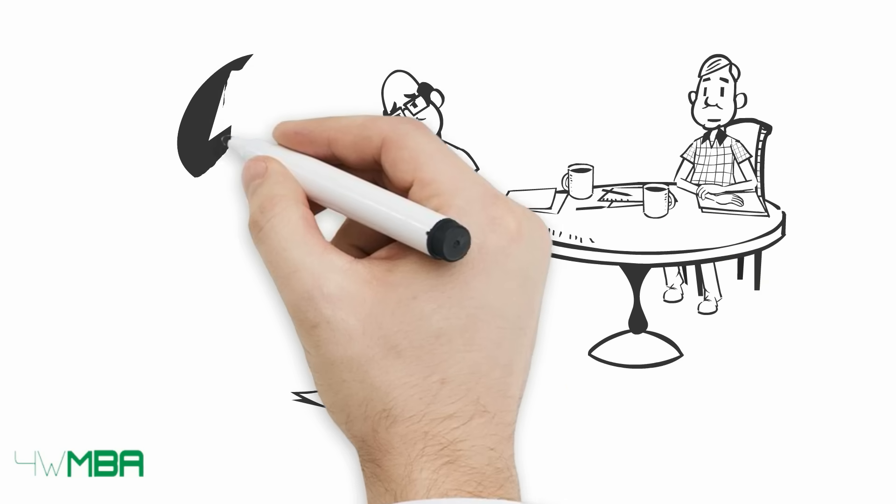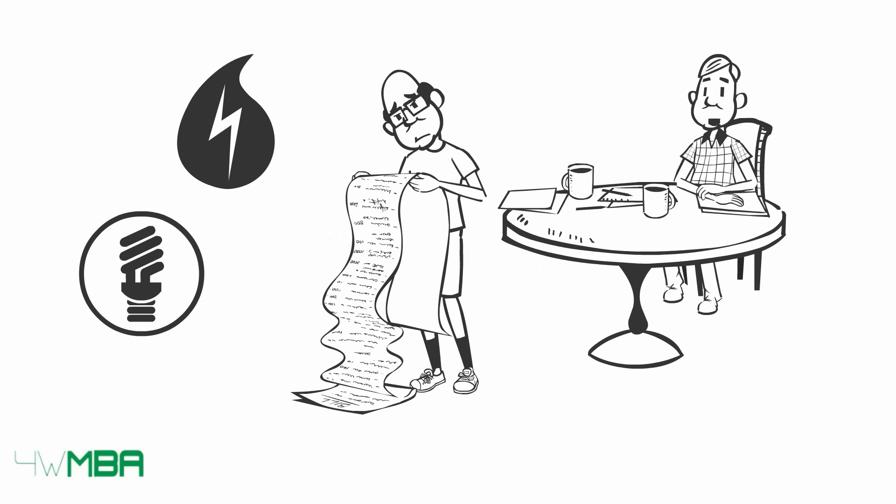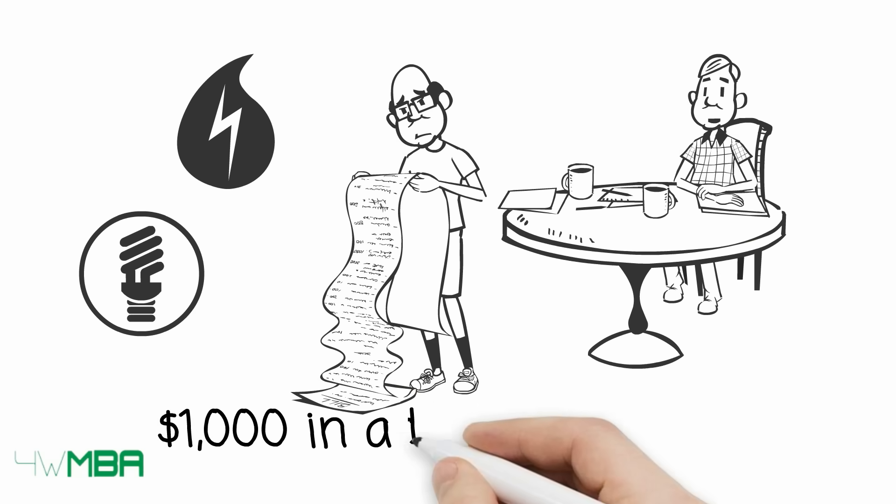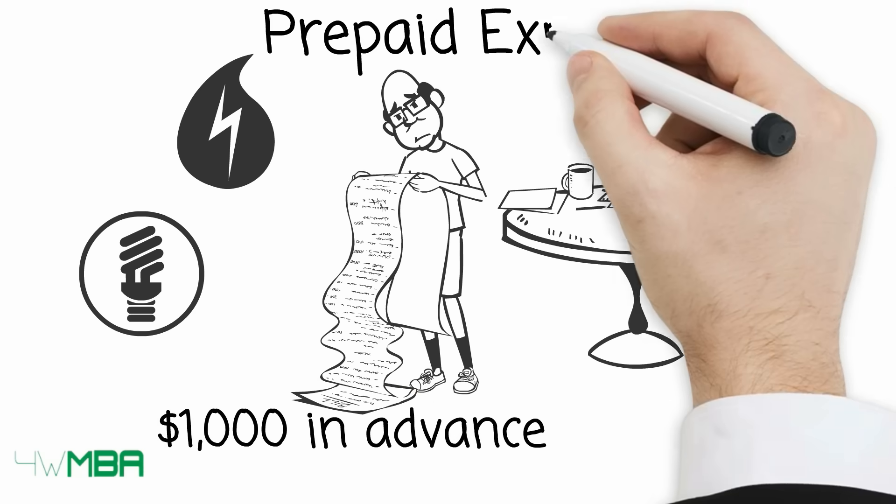Jim has to pay for utilities. Since it is the first time he set up the account, he has to pay 1,000 dollars in advance. This advanced payment will be shown as prepaid expense.